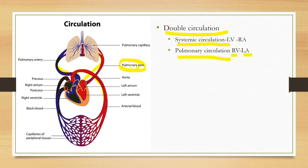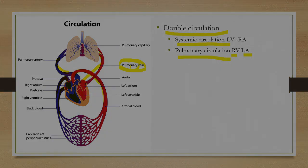The significance of pulmonary circulation is oxygenation of blood, while the significance of systemic circulation is to supply nutrients and oxygen to the body. This is all about the double circulation of the rabbit.